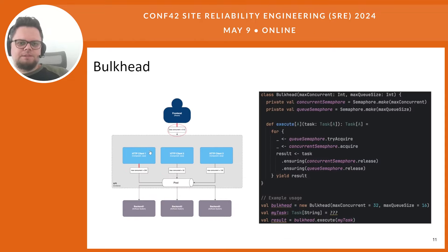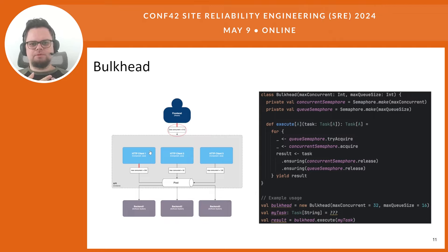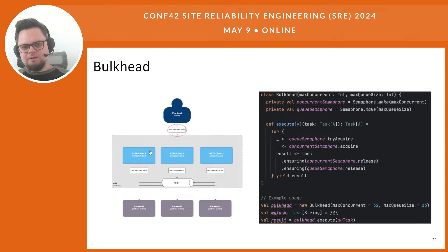You can implement a simple bulkhead just by using a semaphore. Here's an example of Scala code that uses one semaphore to limit concurrent requests and another semaphore to create a queue of pending requests. Such a queue can be useful for smoothing out short-term spikes in traffic and avoiding error spikes. So that was bulkhead — it can help you isolate failures and allow your application to gracefully degrade in case of emergencies.